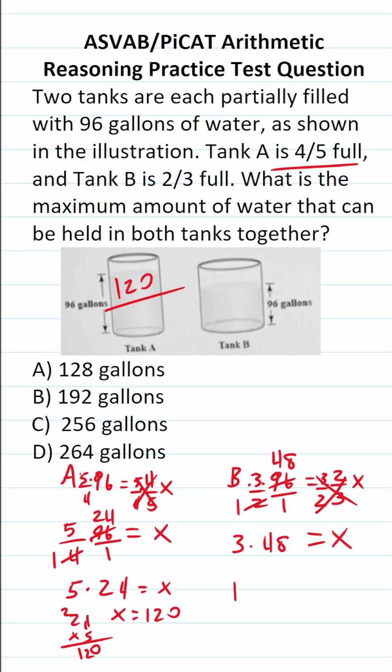If you can't do that mentally, do it off to the side. We have 48 times three. Three times eight is 24, carry a two. Three times four is 12, plus two is 14. So X in this case is 144. That means tank B can hold 144 gallons of water.